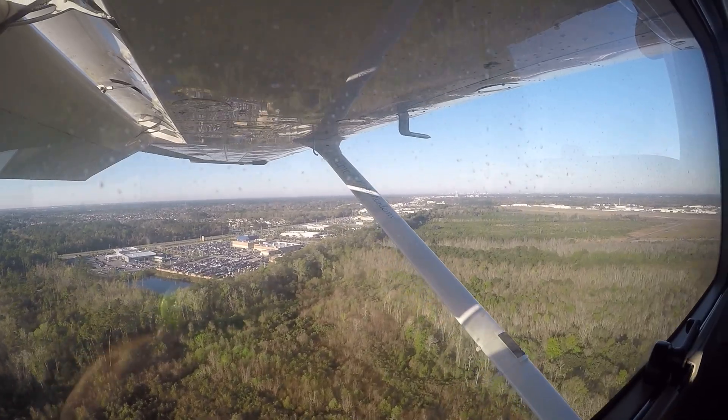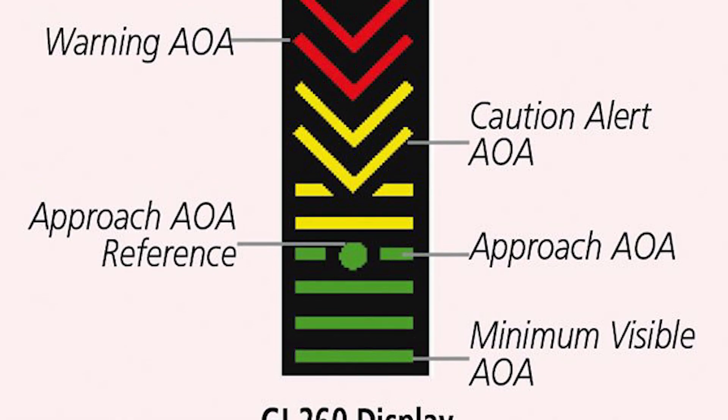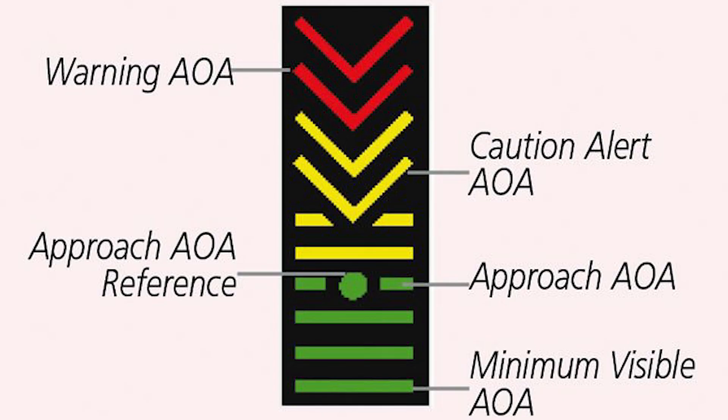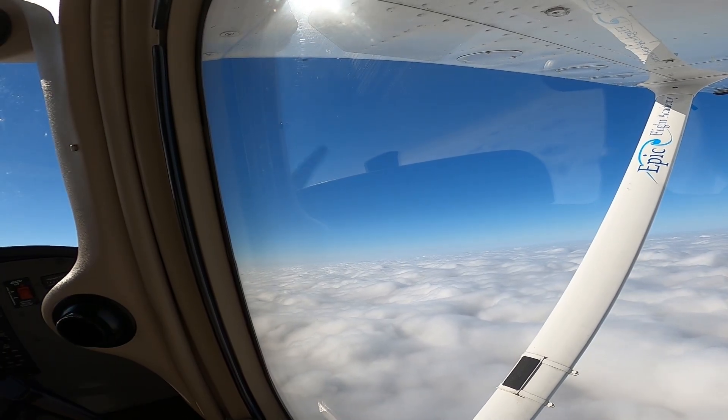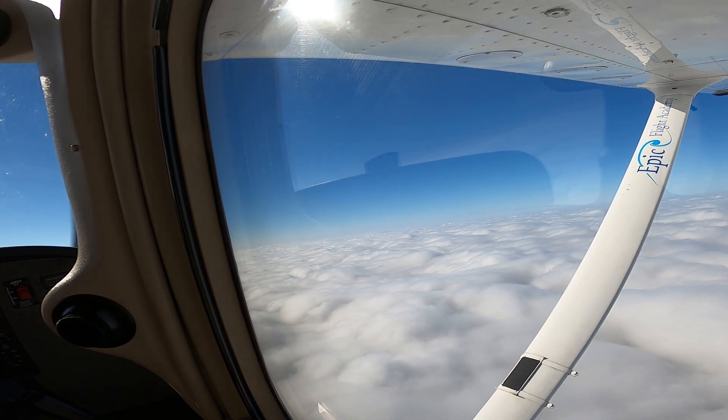If a pilot doesn't manage angle of attack correctly, they could potentially stall the aircraft — which can be dangerous, especially at low altitudes. Instruments known as angle of attack indicators can tell you whether you're approaching or exceeding the critical angle of attack. Another approach is using visual sight pictures and knowing your aircraft well — understanding stall speeds, how bank angle changes stall speeds, and how the pitch angle relative to the horizon gives you an idea of your angle of attack.